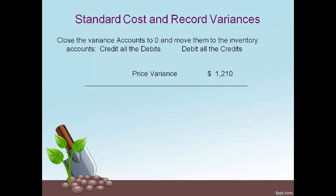The price variance is done separately from the other variance accounts. The price variance comes about when purchasing direct materials. The direct materials purchased could still be in the warehouse, left on the production line, part of finished goods, or included in products that have already been sold. Therefore, the price variance is allocated to all four accounts — direct materials, work in process, finished goods, and cost of goods sold. The question is: how much should be added to each of the four accounts?